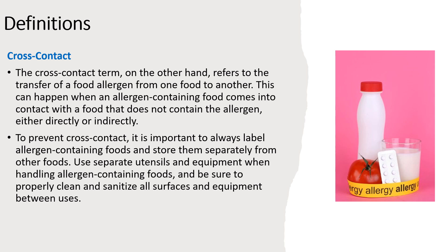To prevent cross-contact, it is important to always label allergen-containing foods and store them separately from other foods. Use separate utensils and equipment when handling allergen-containing foods, and be sure to properly clean and sanitize all surfaces and equipment between uses. Color-coding equipment and utensils also enhances separation of functions and separates workspaces within a food facility.